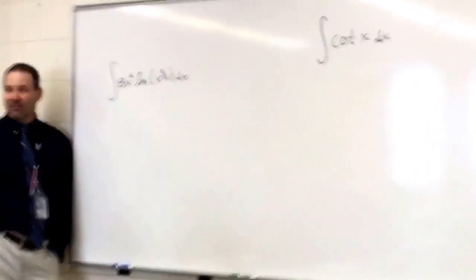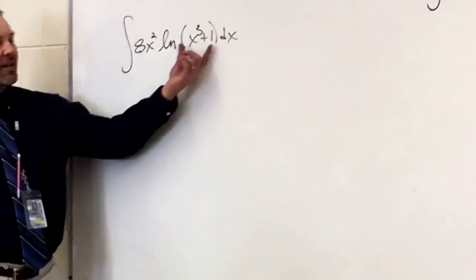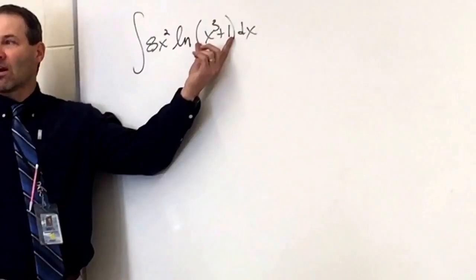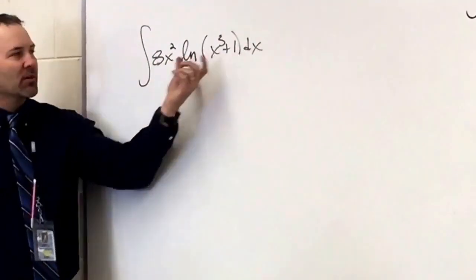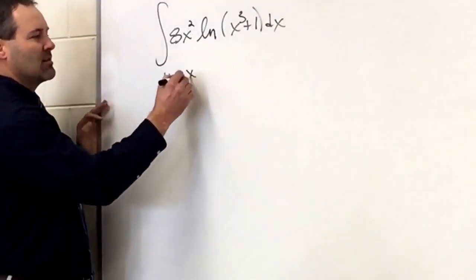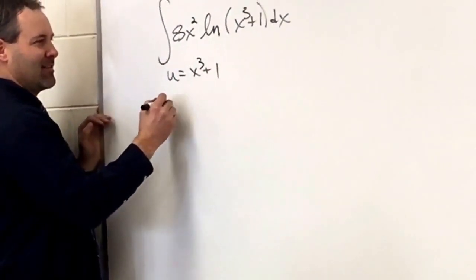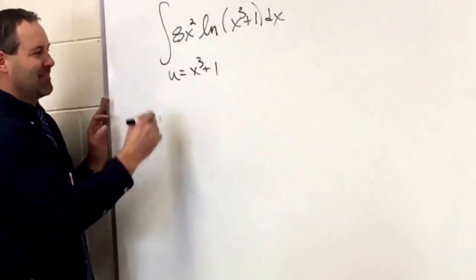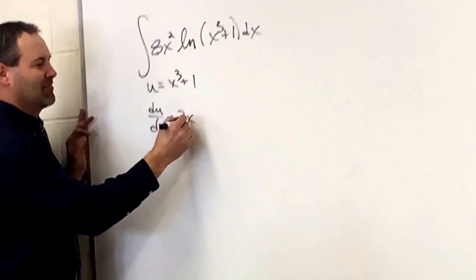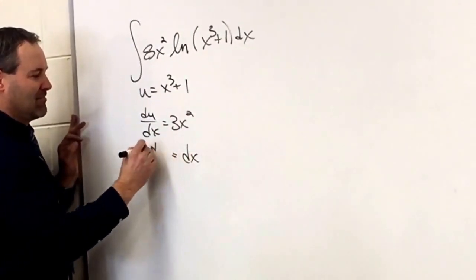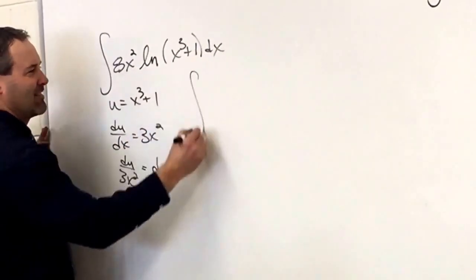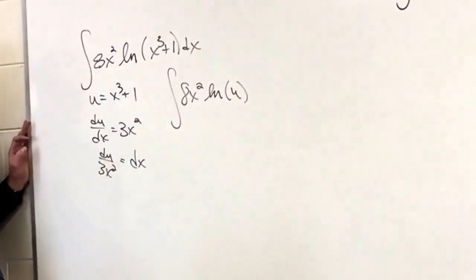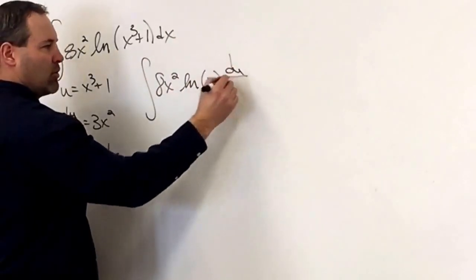What's our u? X cubed plus 1. What's the derivative of x cubed plus 1? Three x squared. So we're going to undo that x squared out front. dx is du over 3x squared. So the x squared disappear. I get an 8 thirds integral.